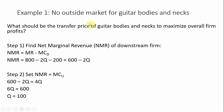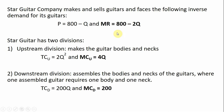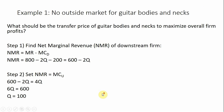Example one: we're going to assume there's no outside market for guitar bodies and necks. What should the transfer price be to maximize overall firm profits? Step one, we need to find net marginal revenue for the downstream division. Net marginal revenue is simply marginal revenue minus the marginal cost of assembly. Marginal revenue is 800 minus 2Q, and the downstream division's marginal cost is $200, so net marginal revenue equals 600 minus 2Q.